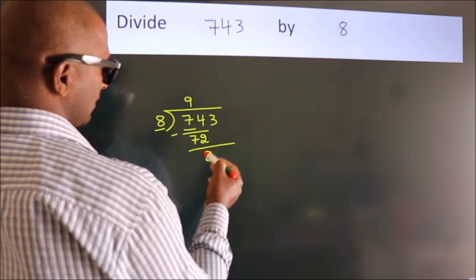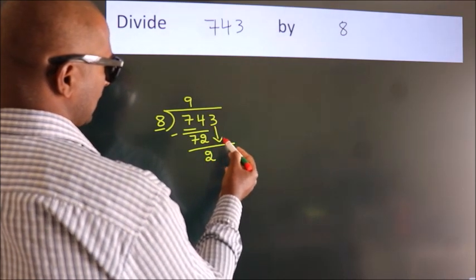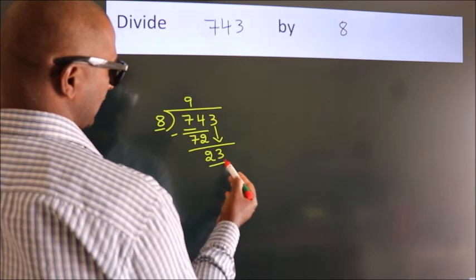After this, bring down the beside number. So 3 down. So 23.